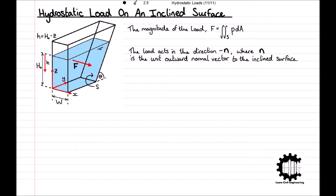As the surface s is inclined, we must introduce a new inclined coordinate, which we will call u. This new coordinate will be a measure of the distance down the surface, starting at the free surface of the liquid, in the direction parallel to the plane of the inclined surface, and will allow us to perform the integral from the equation above in the plane of the surface s.